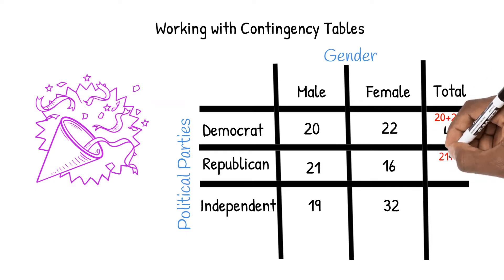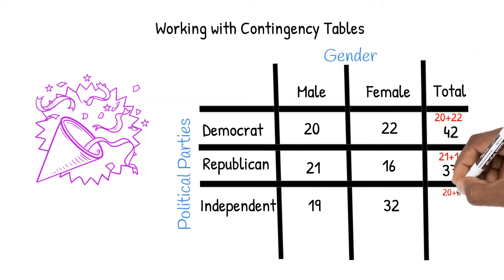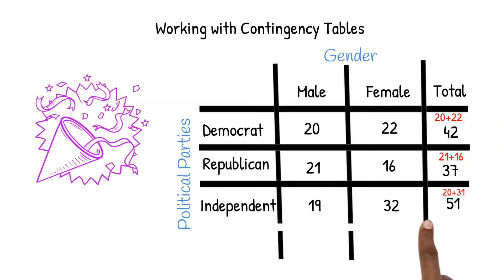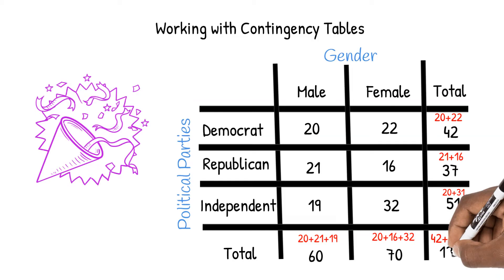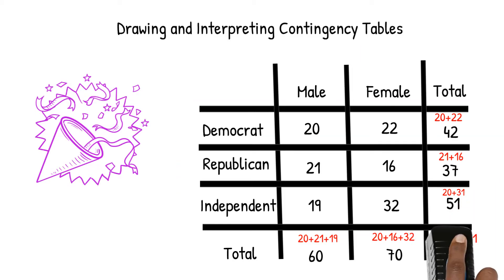We do the same to see that we have 37 Republicans and 51 Independents in our sample. To see the total number of males surveyed, we can add the number of Democrat males, Republican males, and Independent males to get 60. We do the same for the second column to see that we surveyed 70 females. To see how many people were surveyed in all, we can either add the total number of Democrats, Republicans, and Independents, getting 130, or we can add the total number of males and females, also getting the same number.